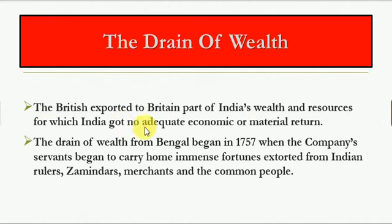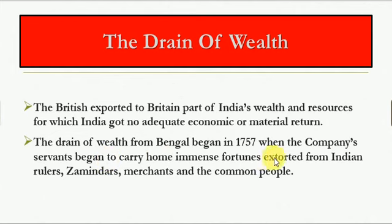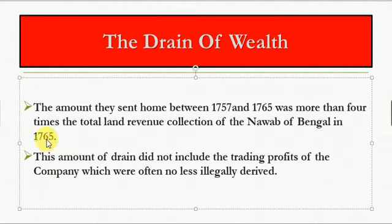The British exported to Britain part of India's wealth and resources, for which India got no adequate economic or material return. The drain of wealth from Bengal began in 1757, when company servants began to carry home immense fortunes extorted from Indian rulers, zamindars, merchants, and the common people.